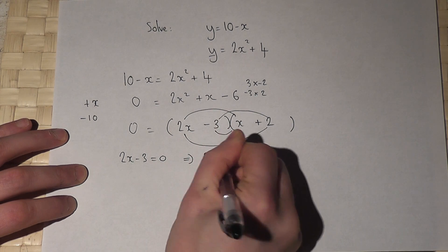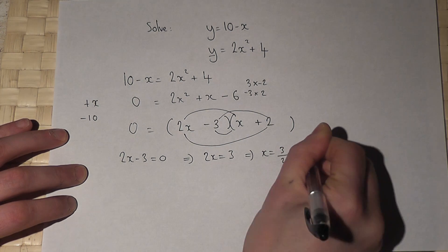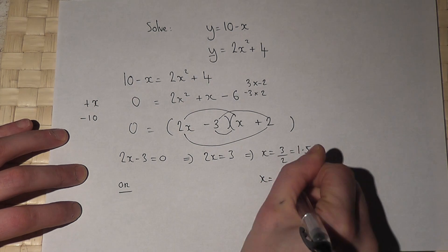so 2x equals 3, therefore x equals 3 over 2, which is 1.5, or x equals minus 2. So they're my two solutions for x.